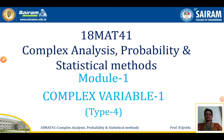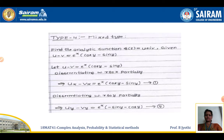Hello and welcome to the lecture session. Today, I am going to discuss about the Type 4 problems in complex variable 1. Find analytic function f(z) = u + iv, given u minus v is equal to e^x into (cos y minus sin y).